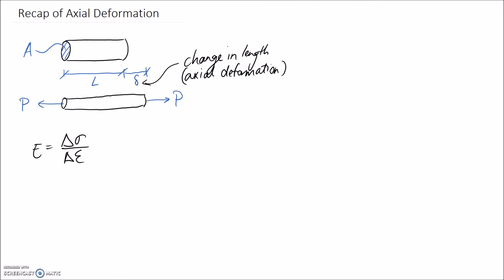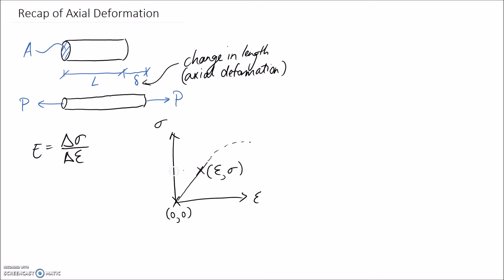We always know that our stress-strain curves start at the point 0, 0. If I quickly draw one, it has some linear region and then does whatever else in the plastic region. If I pick another point on the curve — whatever strain and stress this corresponds to — I can calculate Young's modulus as the difference in stress divided by the difference in strain, which simplifies to stress divided by strain.